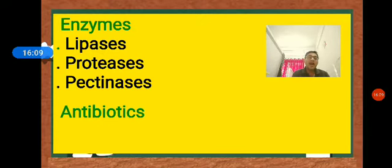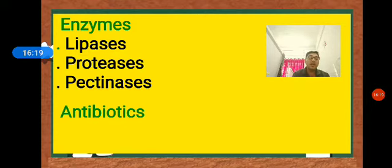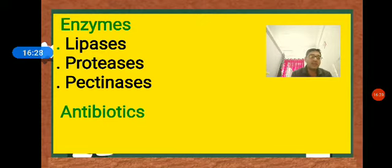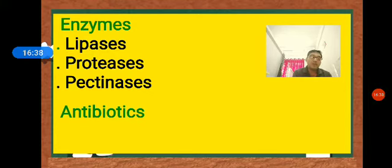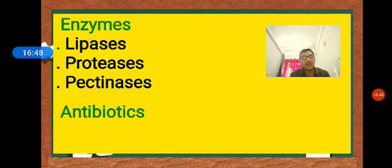Examples of antibiotics include bacitracin, polymyxin B, and cyclomycin, which are extracted from true bacteria called eubacteria. Others like streptomycin, chloromycin, erythromycin, tetracycline, terramycin, and neomycin are obtained from actinomycetes.